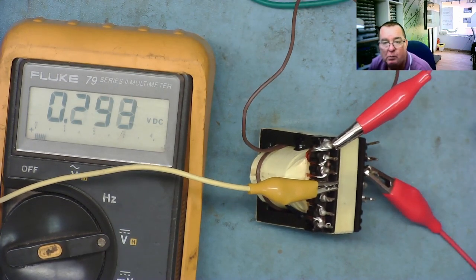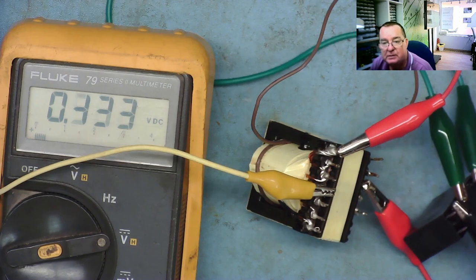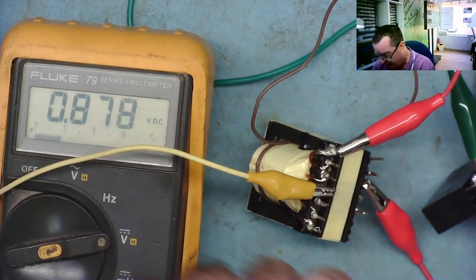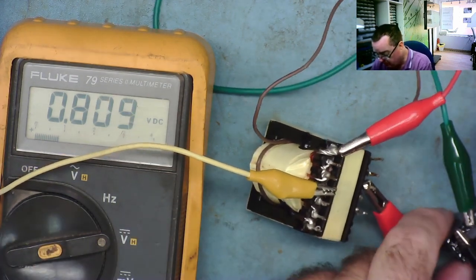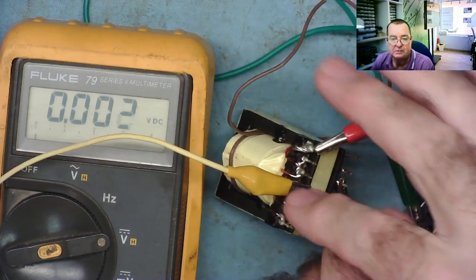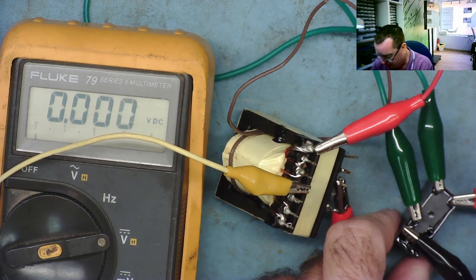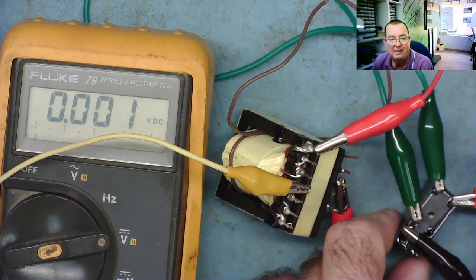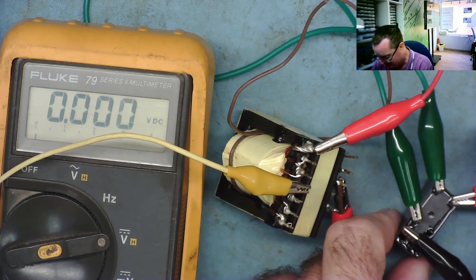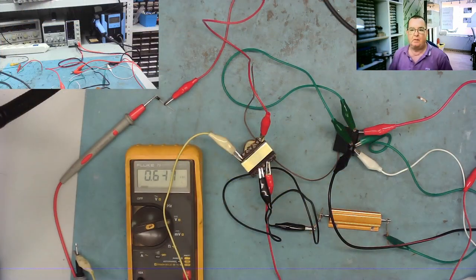We can try one other thing with this experiment, and that's just to rewire it. So we use the other relay contacts to switch the voltage from the bench supply directly through the transformer. Let's see what it thinks of that.